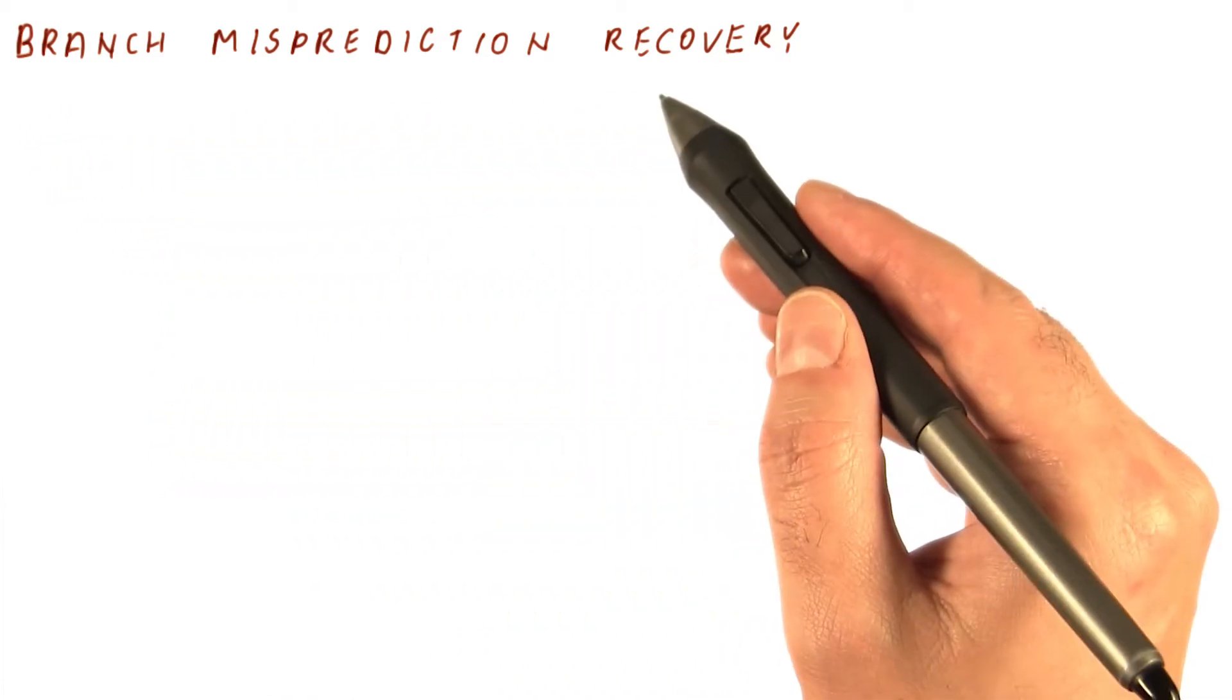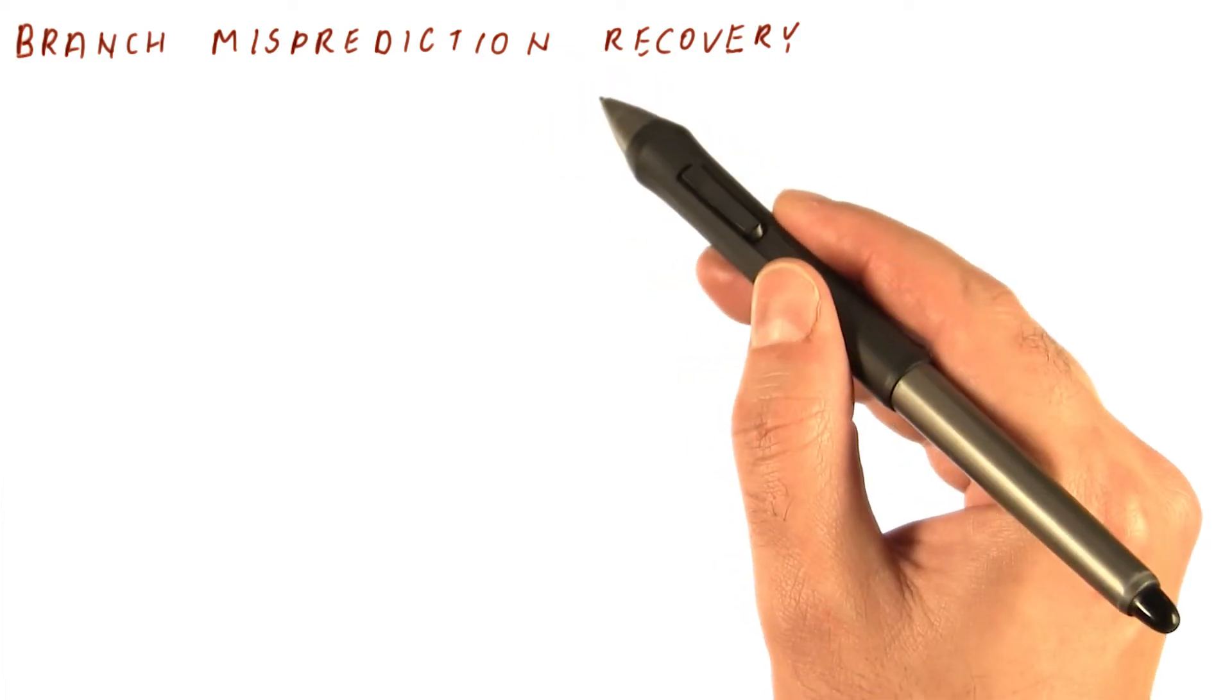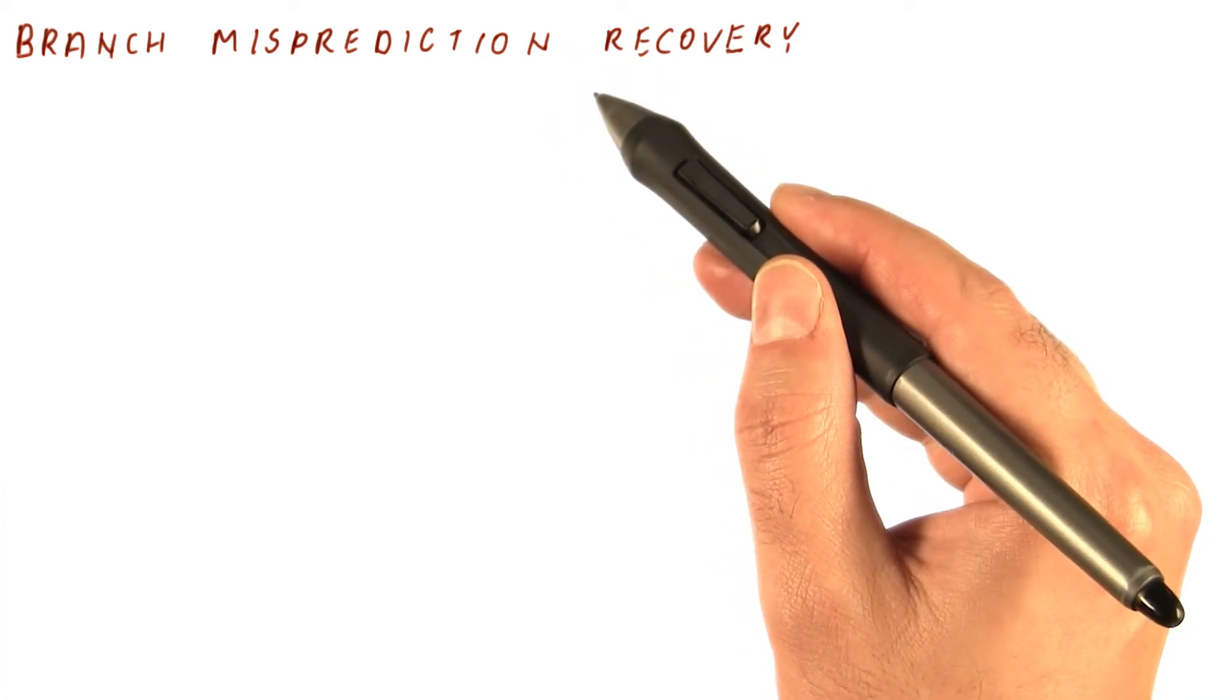We said we need the ROB in order to have precise exceptions and also to be able to easily recover from branch mispredictions. So let's see how that happens.